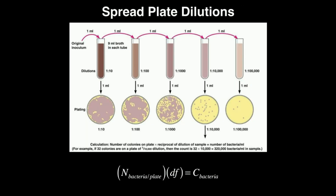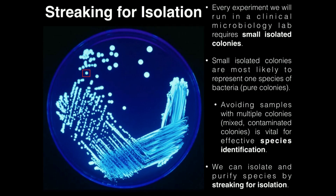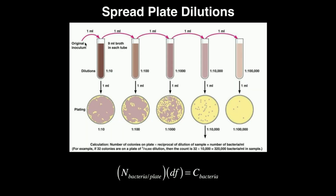Now let's talk about spread plate dilutions. If we were to have an original stock solution — which is always going to be very concentrated with bacteria — and simply plate it on a TSA plate, it would be so concentrated that we would never find a single isolated colony. So we need to do what are called serial dilutions — we need to repetitively dilute the sample.